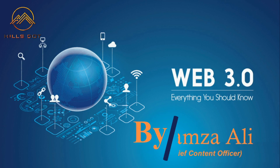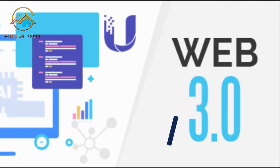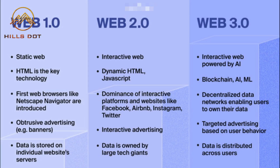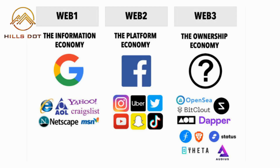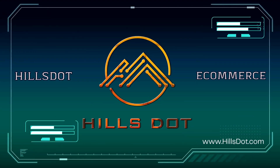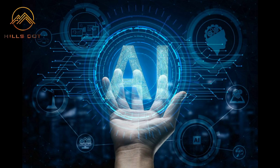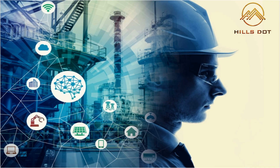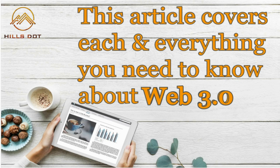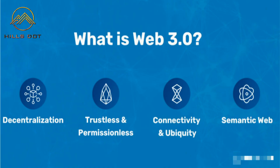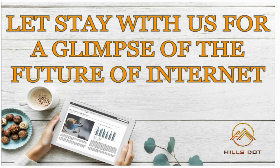What is Web 3.0 and what will it look like? By Hamza Ali. From the invention of the web to the current age of Internet 3.0, the structure and scope of the Internet have undergone several revolutionary changes. We are currently experiencing a fourth industrial revolution in which artificial intelligence, blockchain technology, and other emerging fields are changing how we interact with one another and the world at large. This article covers everything you need to know about Web 3.0 and what it will look like.